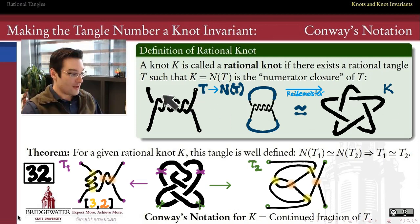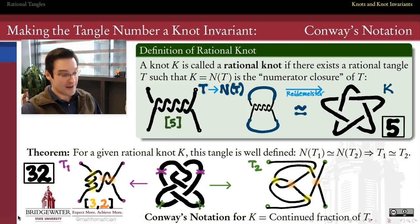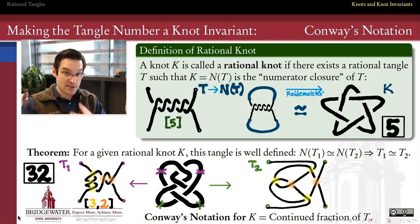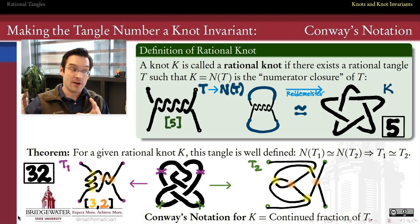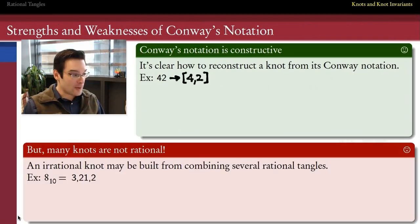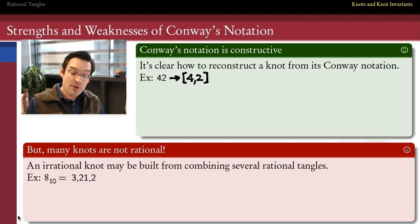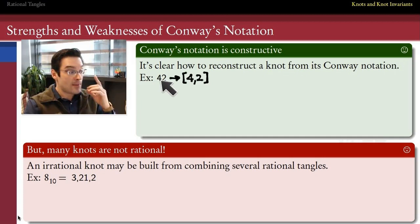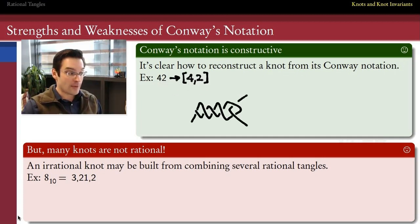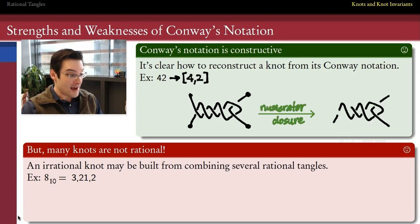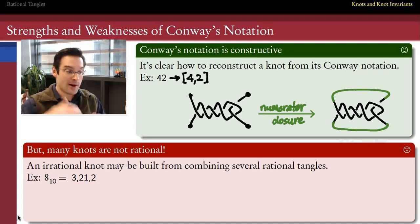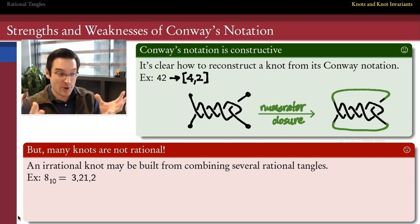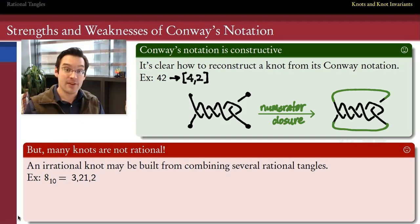Looking at the knot up top, this rational tangle has notation five — it's just a single five-twist — so the five-pointed star knot has Conway notation just plain 5. Conway's notation is nice because it's constructive: if you give me the Conway notation for a rational knot, I have a recipe for how to sketch that knot. If you hand me 42 as a Conway notation, that means [4, 2] as a continued fraction, I know how to build that rational tangle, and then I form the numerator closure to get the rational knot described by 42. This is a valid diagram for the topological essence of the knot whose Conway notation is 42.